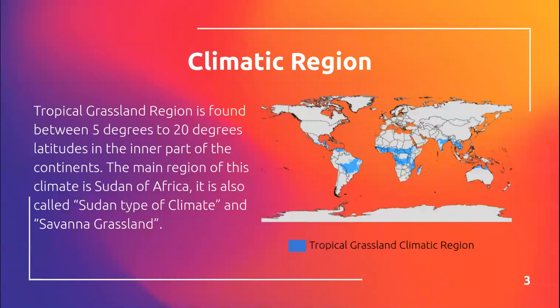Climatic region. Tropical grassland region is found between 5 degrees to 20 degrees latitudes in the inner part of the continents. The main reason of this climate is Sudan of Africa. It is also called Sudan type of climate and savannah grassland.